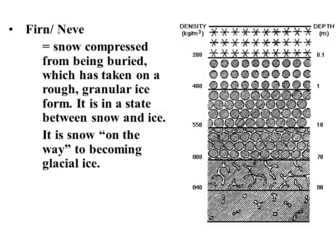Ice forms from the build-up of snow. If accumulation is greater than ablation, layers form. This is called neve and has a granular structure containing trapped air. Pressure gradually squeezes air out of the layers, forming ice. It can take between 30 and 1000 years for glacier ice to form. True glacier ice is not found until a depth of about 100 metres and is a bluish colour.